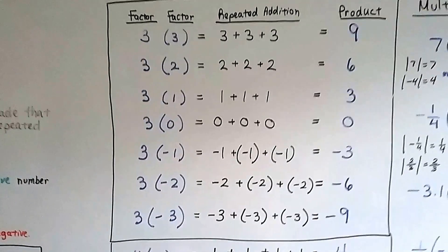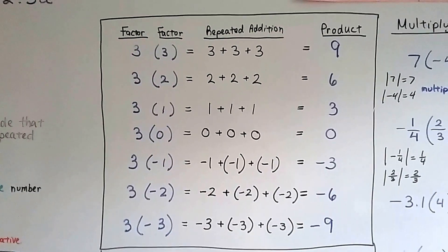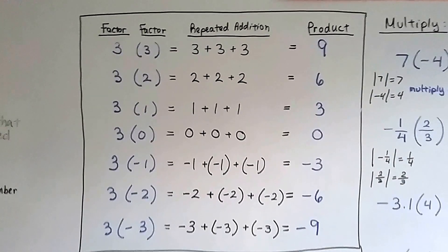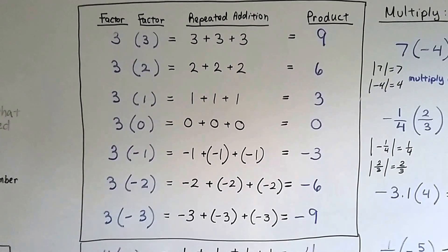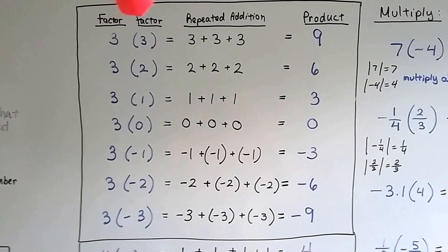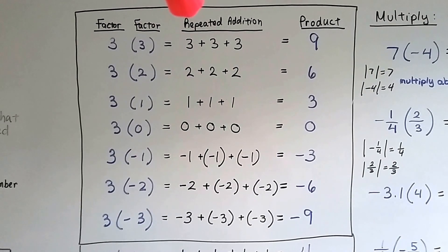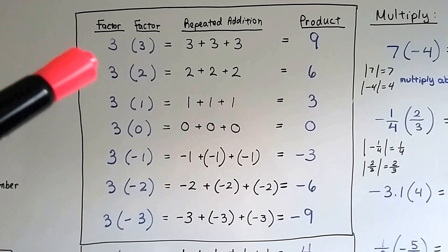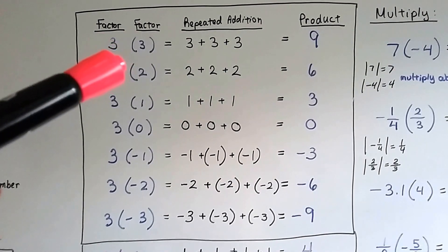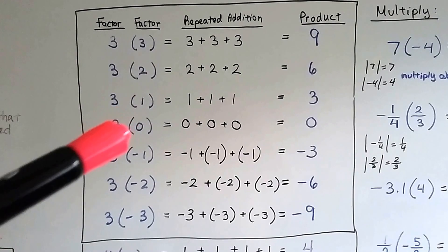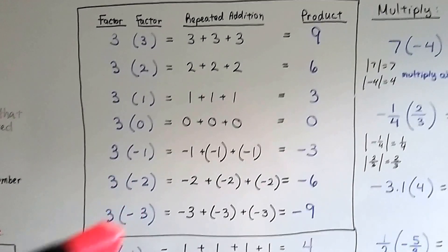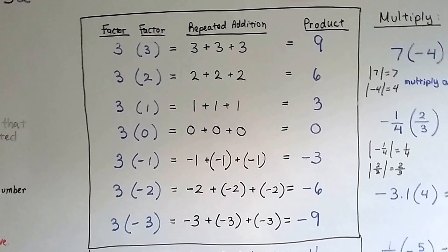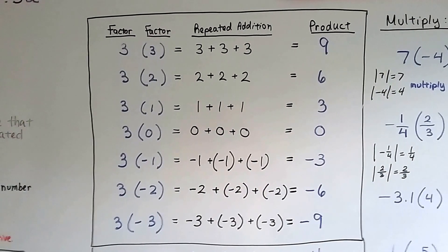Alright, so take a look at this table that I made. I've got a column of factors of 3 and some factors that are being multiplied to 3, and we can see what's happening. 3 times 3 in repeated addition is just 3 plus 3 plus 3. That's 9. And we go down by an increment of 1, 2, 1, 0, negative 1, negative 2, negative 3. Almost like this column of factors is a number line, but it's going vertical.